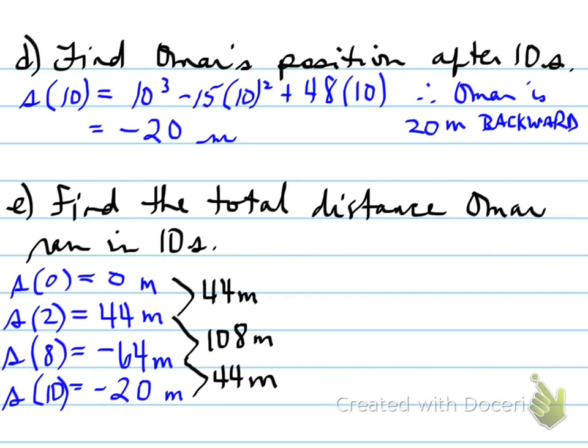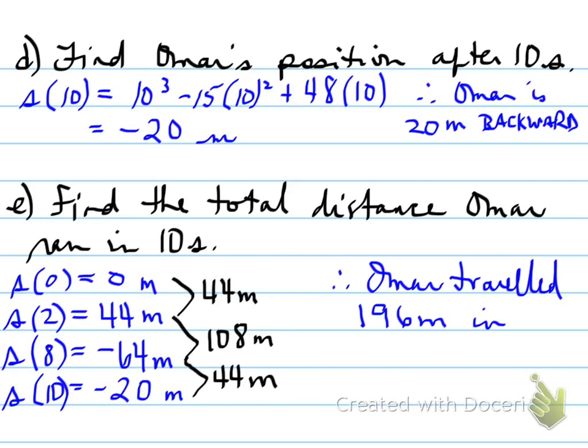Then from negative 64, he traveled to negative 20 meters, moving in the forwards direction 44 meters. So in total, Omar traveled a total of 196 meters from 0 to 10 seconds.